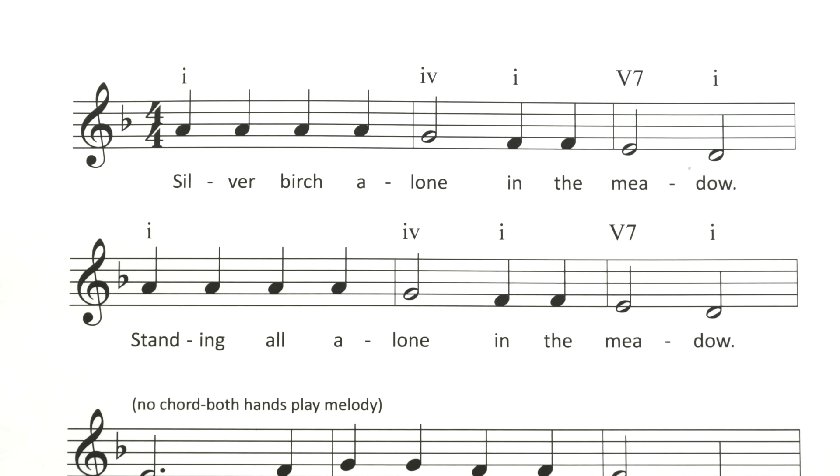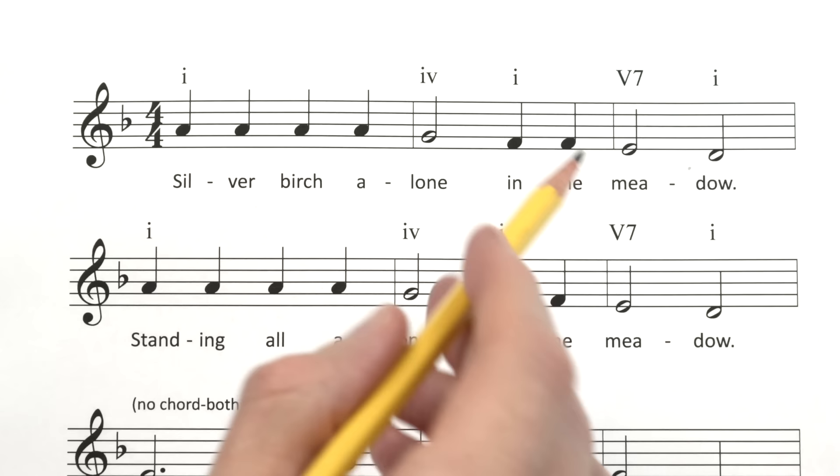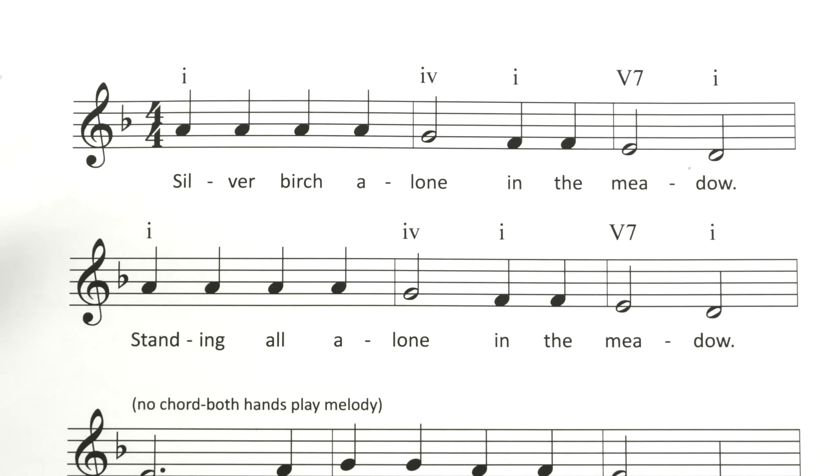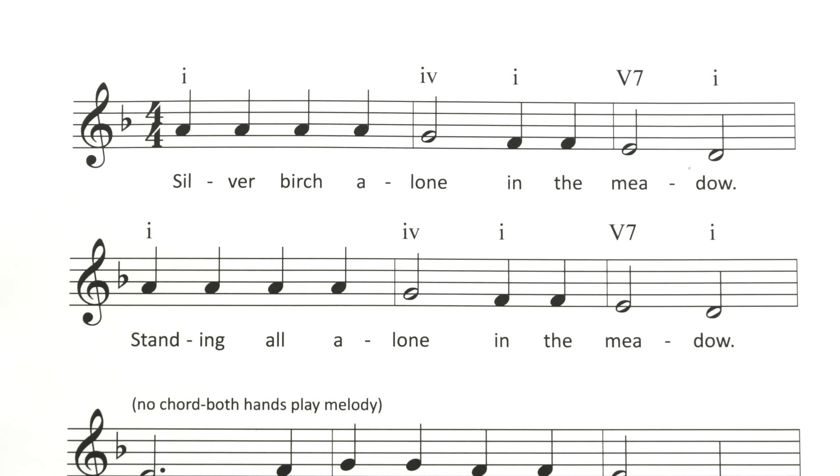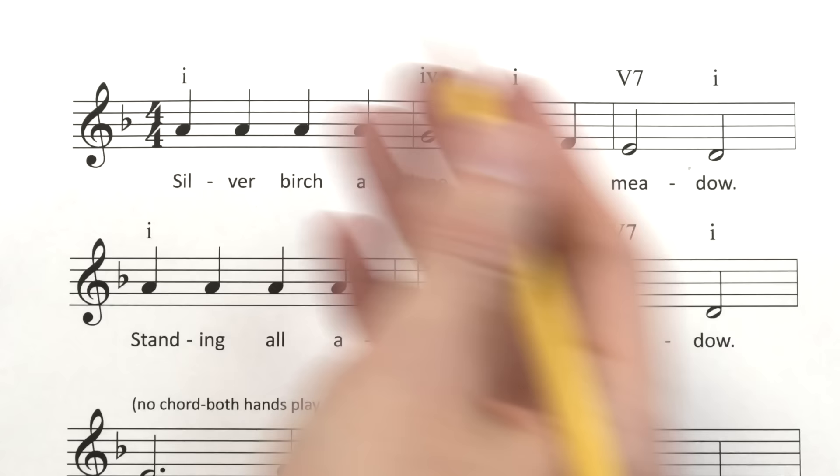Let's check out the sheet music for Silver Birch Tree. You'll notice today we don't have a grand staff, we just have this treble staff with the chord symbols written up above. So you really have two options for piano music: you can have a treble staff and a bass staff for the right hand and left hand, or you can just do the treble staff with the chord symbols written up above to tell your left hand what to play. This is called lead sheet style and it's commonly used in pop or jazz styles, and I want you to be familiar with both grand staff style and this lead sheet style.